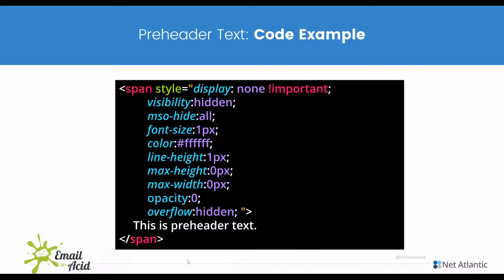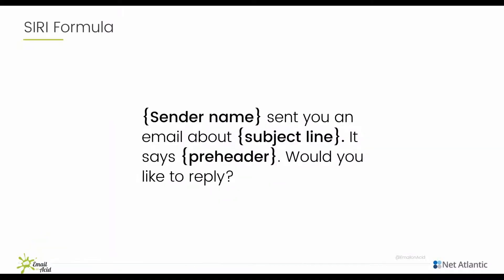So when the email is actually open, this is hidden from that open display. And with Siri, how it reads it is: it will say the sender's name, send an email about the subject line. And then it says it will read out the pre-header — 'Would you like to reply?'